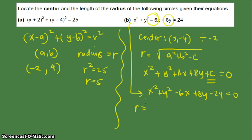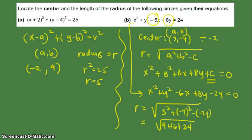So to find the radius, the a and b are the x and y value of the center. So you have the square root of 3 squared plus negative 4 squared minus negative 24 which is a value of c. So you have 9 plus 16 plus 24. Now, 9 plus 16 is equal to 25. So plus 24, this is equal to 49.